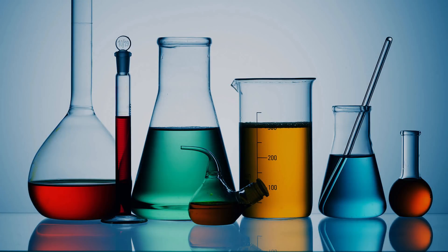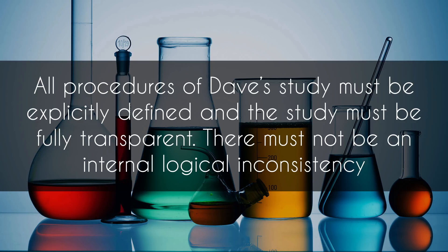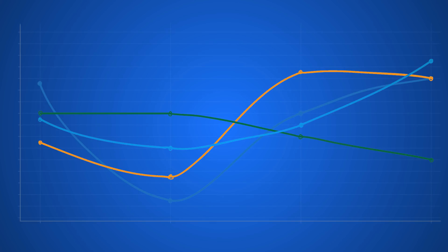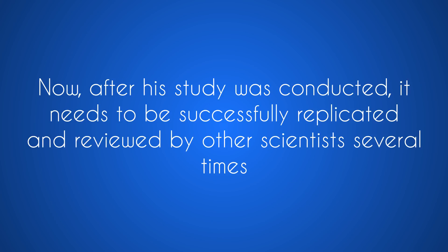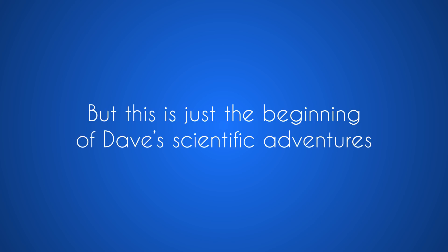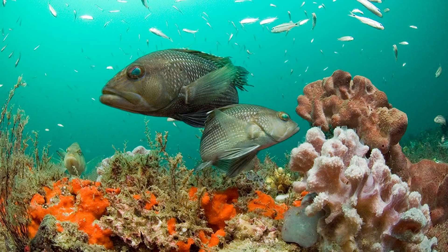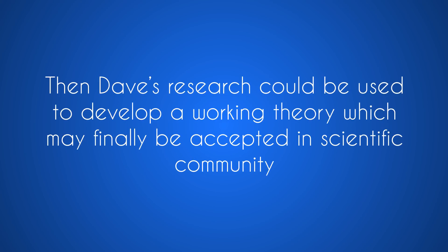If Dave's hypothesis satisfies these criteria, experimentation can begin. Dave must design his experiments so that other scientists can repeat them without his presence to check validity and trustworthiness of results. All procedures of Dave's study must be explicitly defined and the study must be fully transparent. There must not be an internal logical inconsistency. If Dave's experiments somehow result in confirmation of his hypothesis, he needs to analyze data and draw final conclusions. After his study is conducted, it needs to be successfully replicated and reviewed by other scientists several times. Now he needs to find a hypothesis for another aspect of the living world superior to that of evolution, and the cycle starts again. This process of conducting studies following the fundamental principles of scientific method needs to be repeated until the evidence stacks up to the point where a paradigm shift is required. Then, Dave's research could be used to develop a working theory which may finally be accepted in the scientific community.